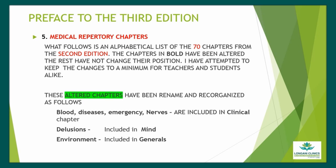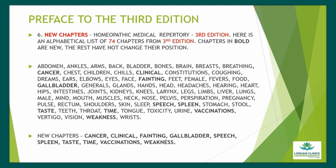Homeopathic Medical Repertory 3rd edition contains 74 chapters arranged alphabetically. The chapter starts from Abdomen, Ankles, Arms, and goes through to Vision, Weakness, and Wrist. The new chapters are: Cancer, Clinical, Fainting, Gallbladder, Speech, Spleen, Taste, Time, Vaccination, and Weakness.